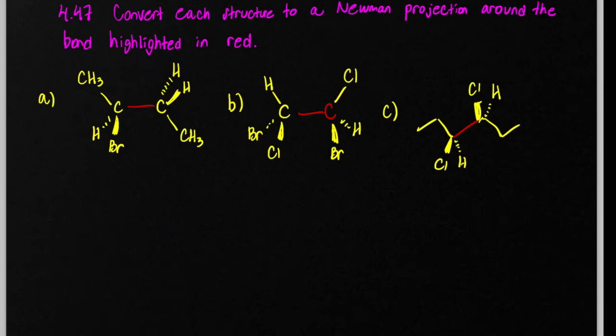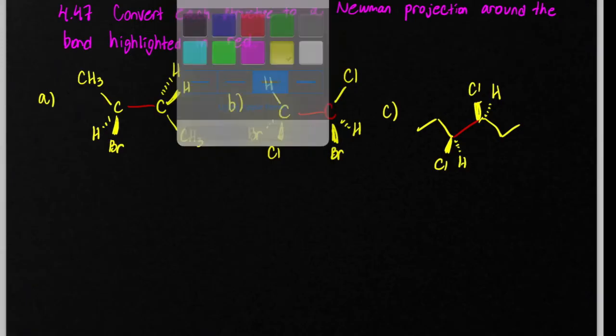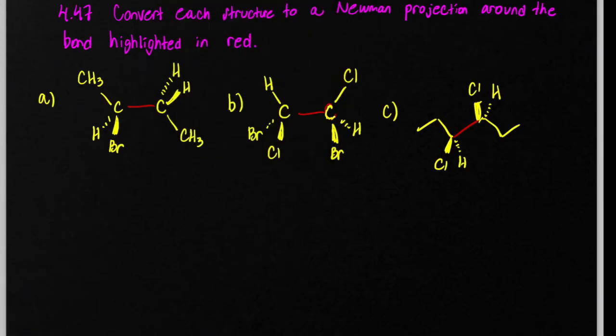Problem 47 here asks us to convert each structure to a Newman projection around the bond highlighted in red. Now, what you'll want to do, generally speaking,